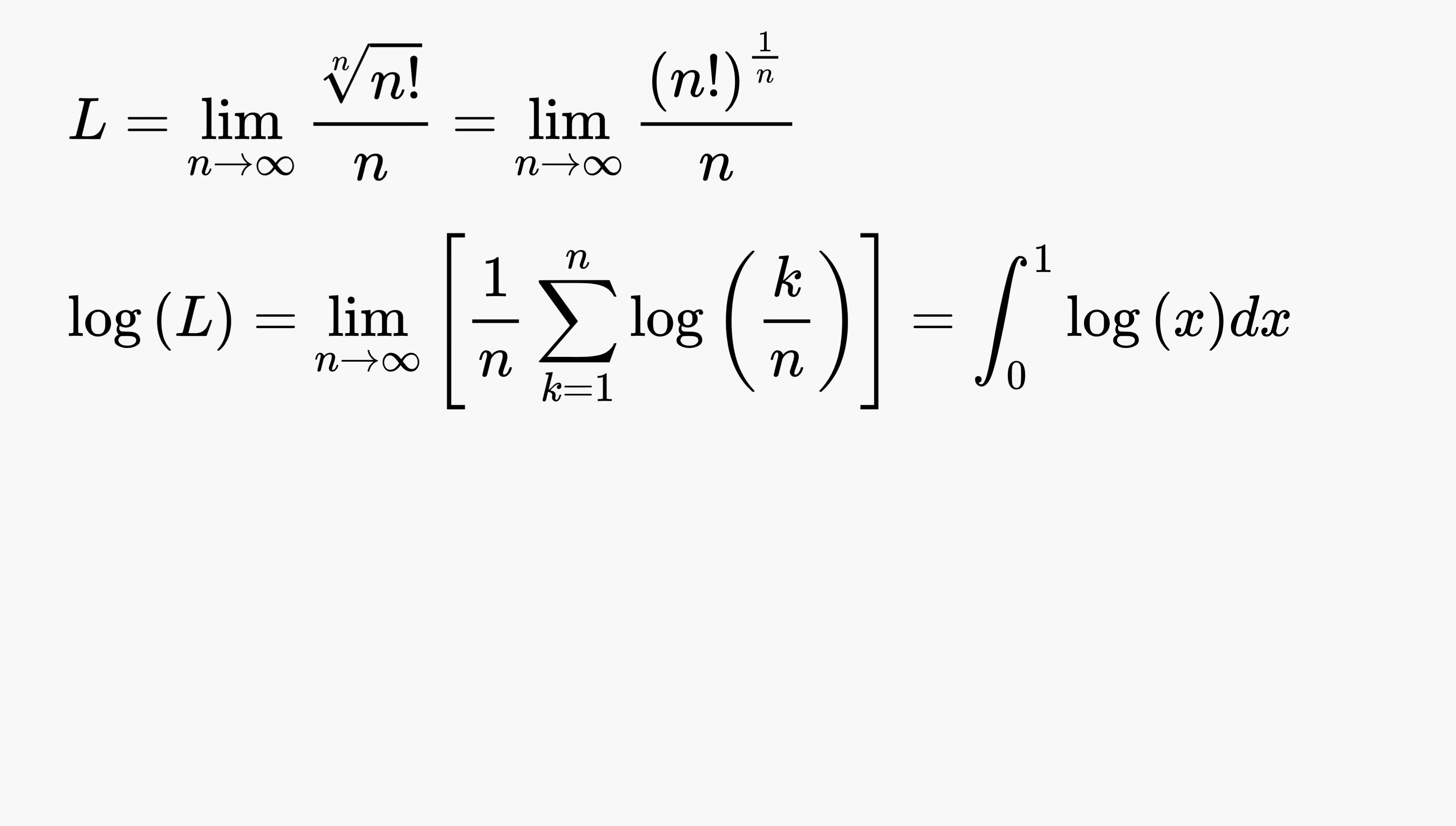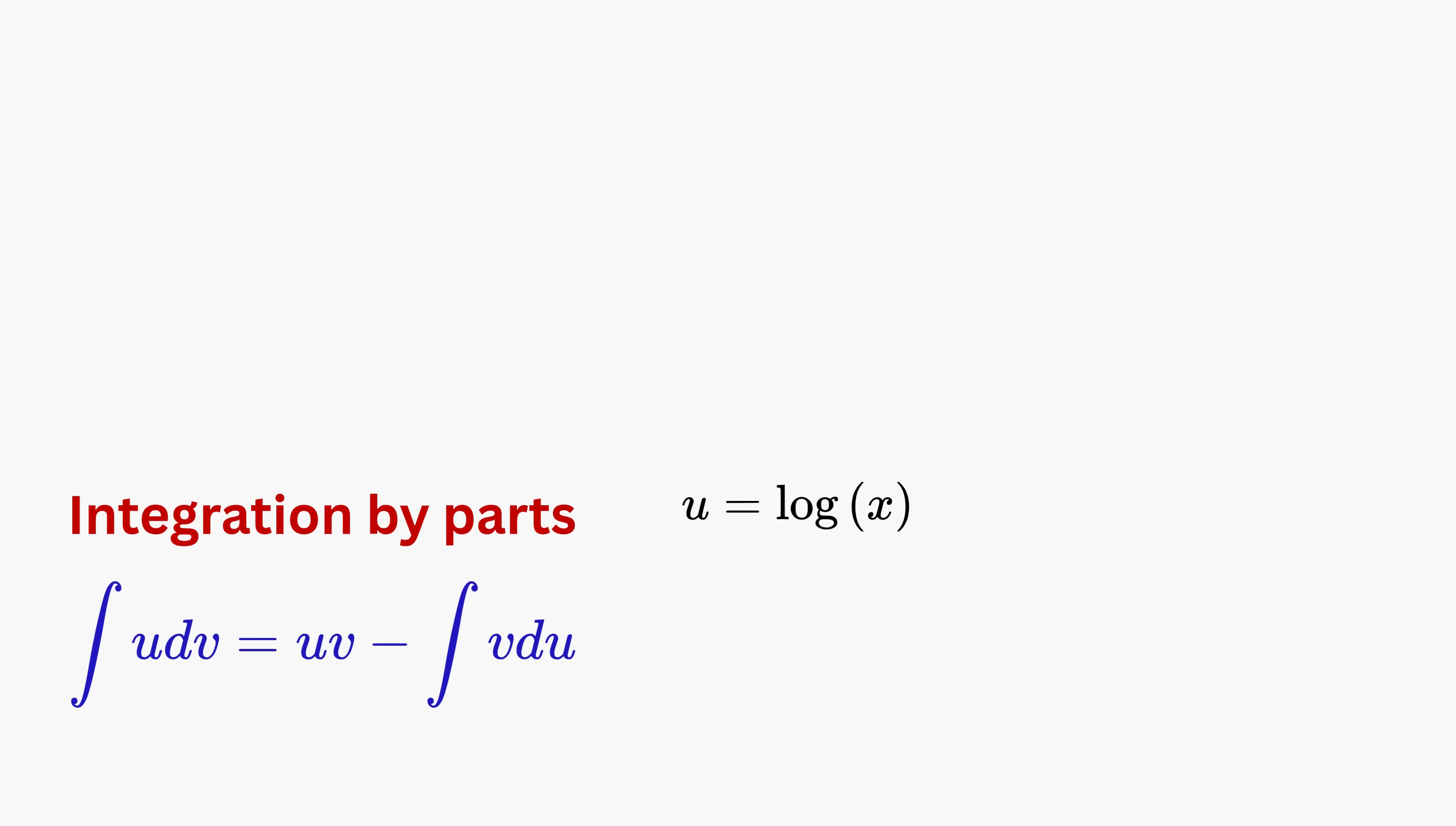To solve it, we use a technique called integration by parts. We choose u as log(x) and dv as dx. Differentiate both sides to get du as 1/x times dx, and v equals x. Substitute it here. This gives us x times log(x) minus the integral of 1, which is nothing but x.